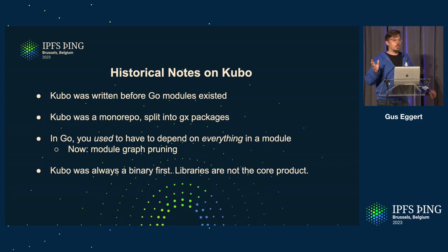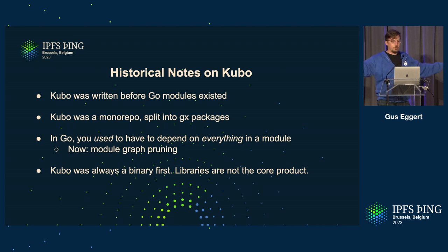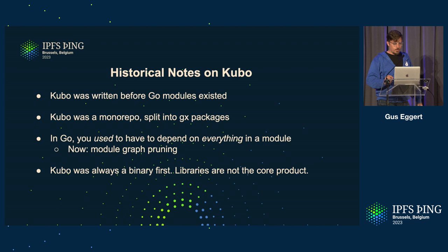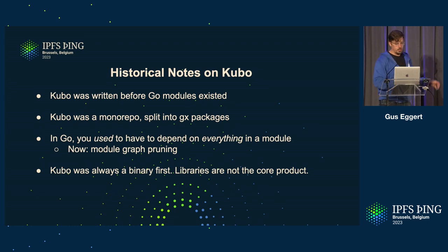Some historical notes on Kubo: it's old. It was written before Go modules even existed, before there was version management for Go. It used to be a monorepo, then it was split out into lots of repos, into GX packages. GX is an IPFS package manager made a few years ago that has since been abandoned. Go recently has module graph pruning, where if you depend on a module you only depend on the ones you actually need. And Kubo was always a binary first — it's a CLI. That's the product, not the libraries. And it shows.